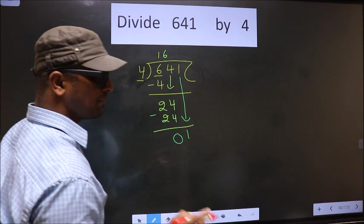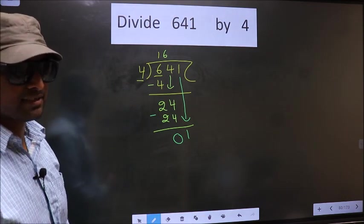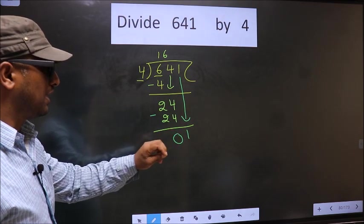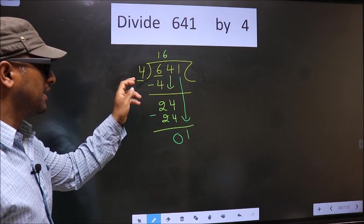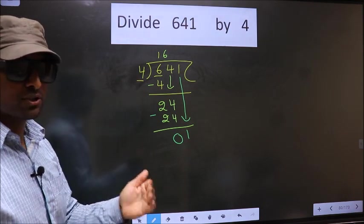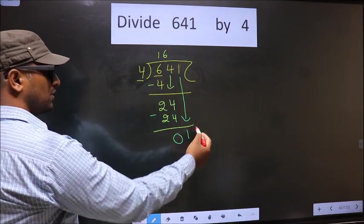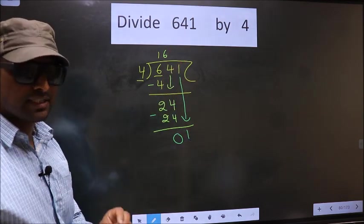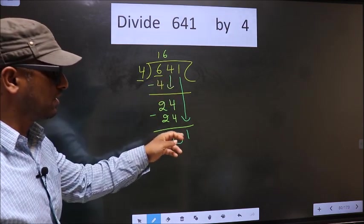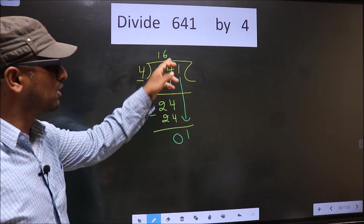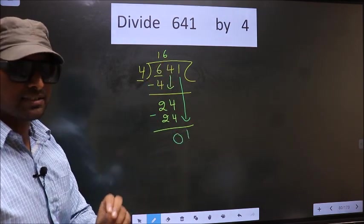This is where the mistake happens. Here we have 1 and here 4. 1 is smaller than 4. So what many do is, they put a dot and take 0 here, which is wrong. Just now you brought the number down, and in the same step, you want to put a dot and take 0 here, which is wrong.